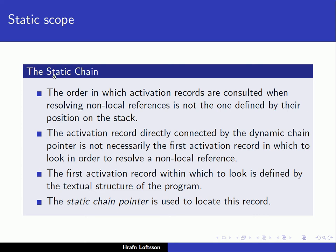We have a specific pointer called the static pointer. If we follow the static pointer, we have the static chain. The order in which activation records are consulted when resolving non-local references is not the one defined by the position on the stack. We have activation records directly connected by the dynamic chain pointer. The dynamic chain pointer points to the previous activation record on the stack. Following the dynamic chain pointer to the previous record may not lead to the one that holds our non-local reference — it is not guaranteed that the previous record holds the non-local reference.